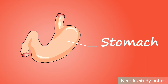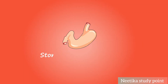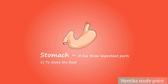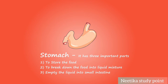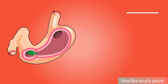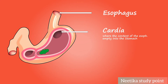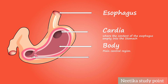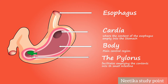Stomach — it has three important parts: esophagus, cardiac, body, and the pylorus.